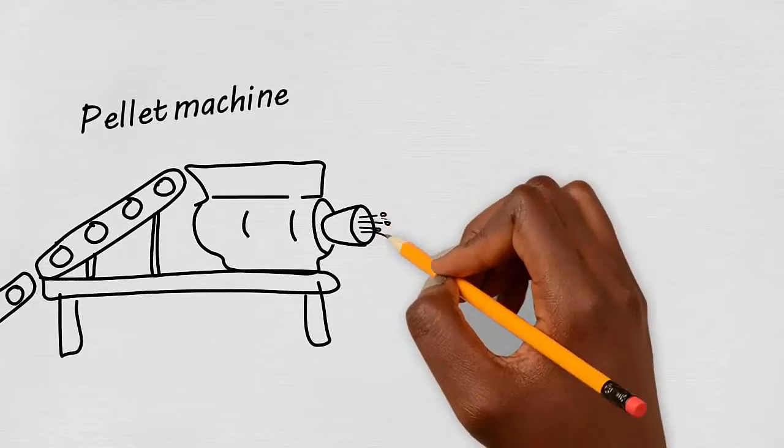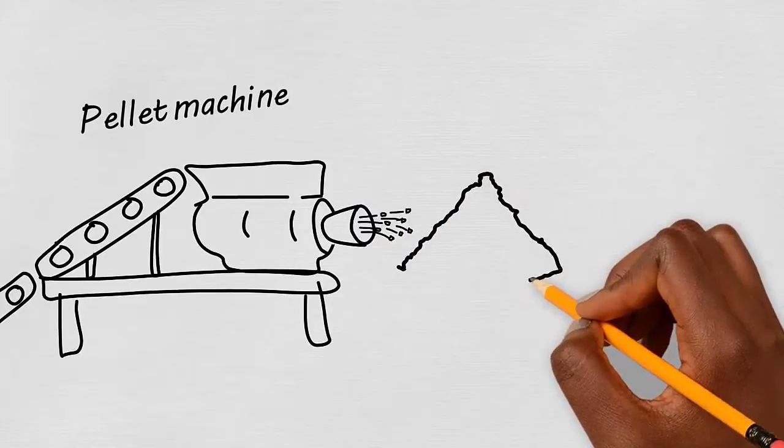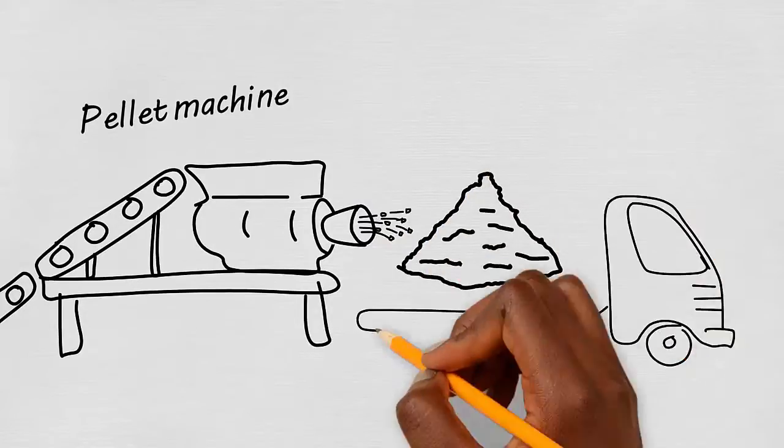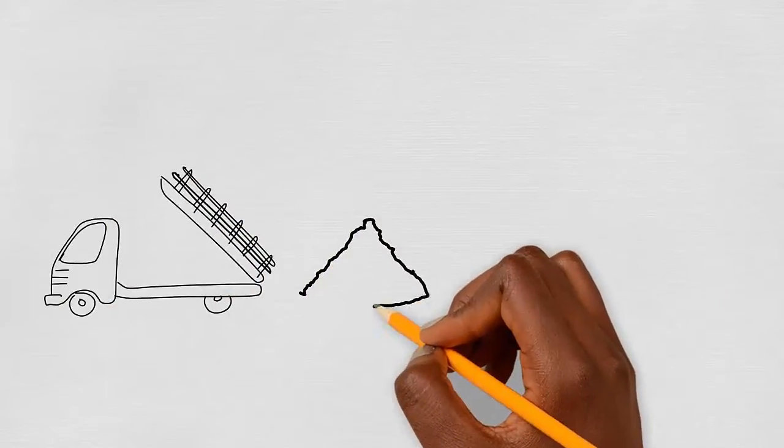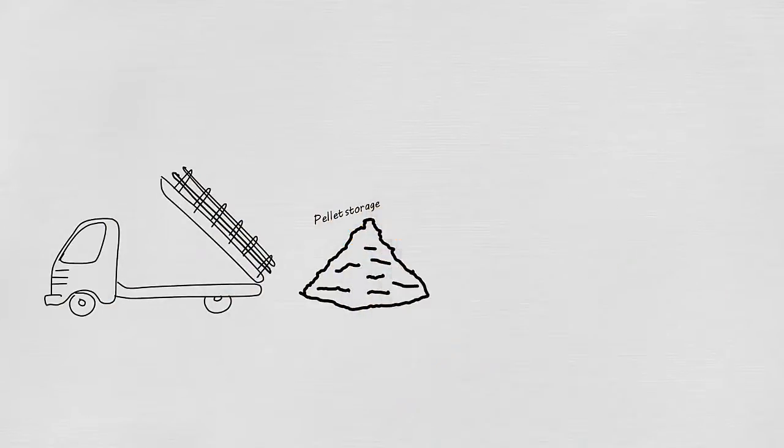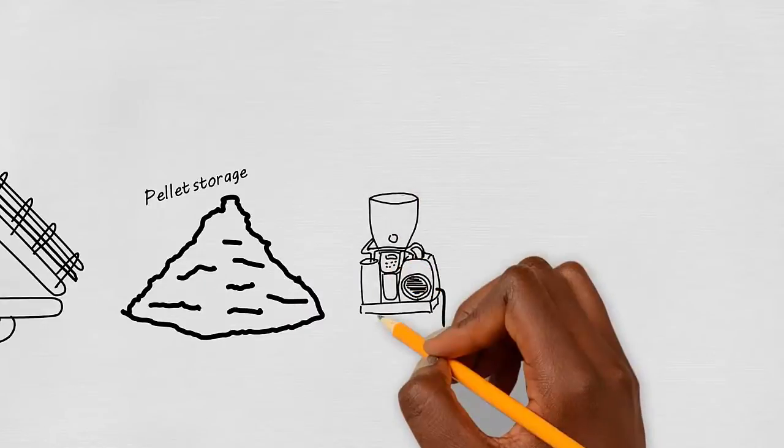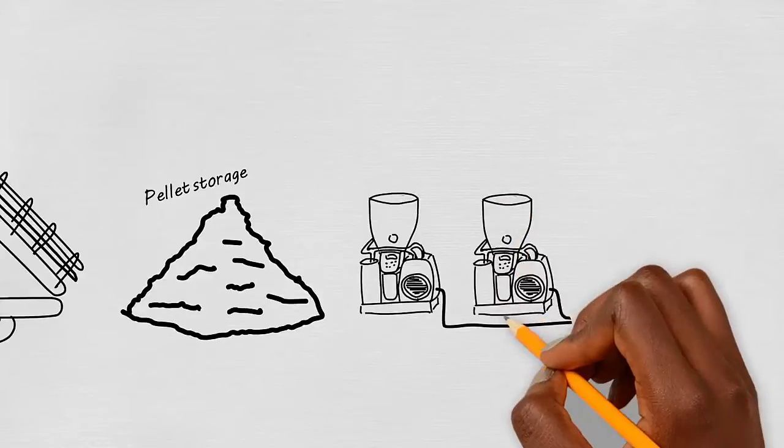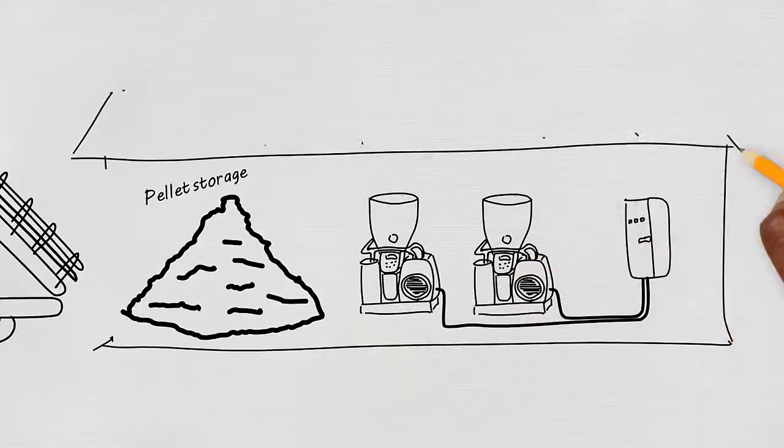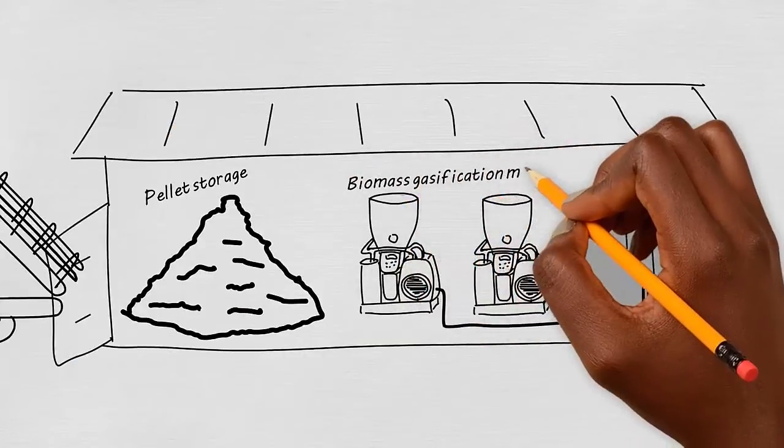The pellet machine compacts and dries the waste, making it perfect for storage. As in my village, all the waste is produced in just a few months of the year. The pellets will return to my village to the renewable power plant installed by the project. In this power plant, the biomass generator will transform this waste into electricity.